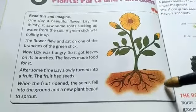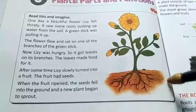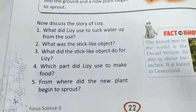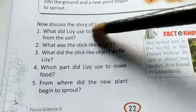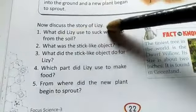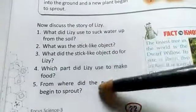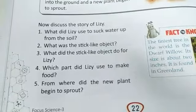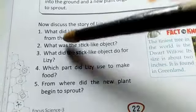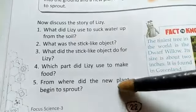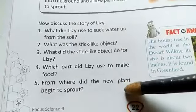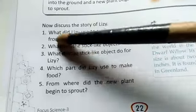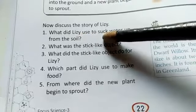After a few days, Lizzie turned into a fruit. As it ripened, it fell down on the ground, and again one new beautiful flower tree grew up. Now let's discuss the story of Lizzie with some questions.